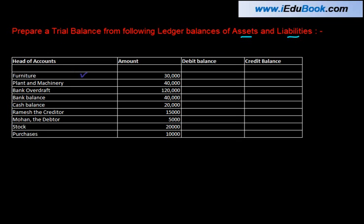The first one is furniture. Furniture is an asset, and an asset has a debit balance, so this will come on the debit side with 30,000. Plant and machinery is again an asset, and as I told you, an asset has a debit balance. For liabilities, it will be a credit balance. Whenever you get any balance, just pick it up and put it in either the debit column or the credit column as the case may be.